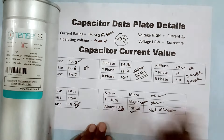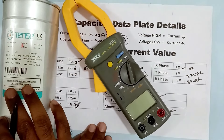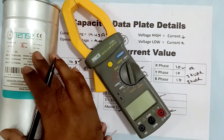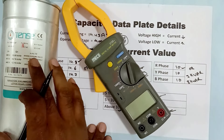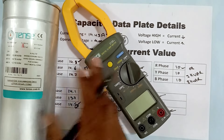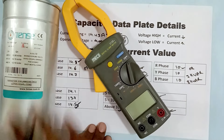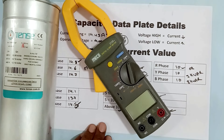So friends, we just checked this capacitor using a clamp meter to determine whether it is okay or not. You can also check a capacitor through a multimeter. I don't have that type of multimeter right now, but when I do, I will make another video explaining how to check a capacitor with a multimeter. If you learned something new from this video, please like, share, and comment, and subscribe to the channel. Thanks for watching!